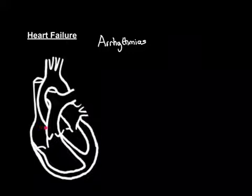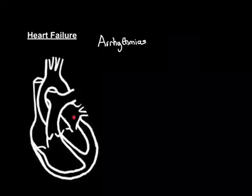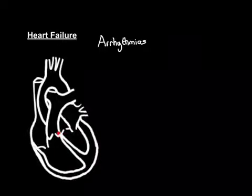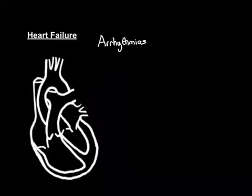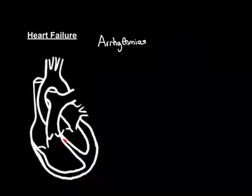Those action potentials spread from cardiomyocyte to cardiomyocyte across the atria and cause the atria to contract. There is a fibrotic band of tissue that separates the atria from the ventricles and stops the atrial cardiomyocytes from propagating action potentials to the ventricular cardiomyocytes. The only hole in that fibrotic band is called the atrioventricular node, and that's the only way the action potential can normally propagate to the ventricles. So it makes its way down to the atrioventricular node, which conducts it through to the ventricles.